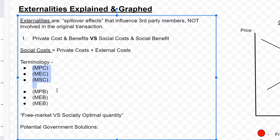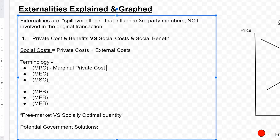From that we get six key terms. We have marginal private costs, marginal external costs, and marginal social costs. MPC — marginal private cost — is the cost for the private individual or the private firm: the cost of production, or the cost of buying something for an individual or for a firm.